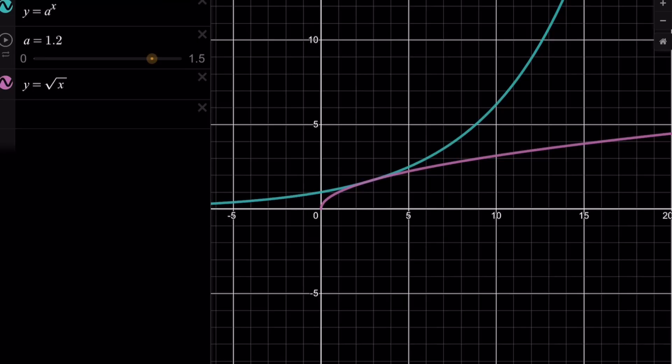And at some value of a, kind of like 1.2-ish maybe, the graphs are going to be tangent. But obviously, this is not a proof by any chance. We're going to go ahead and evaluate it.